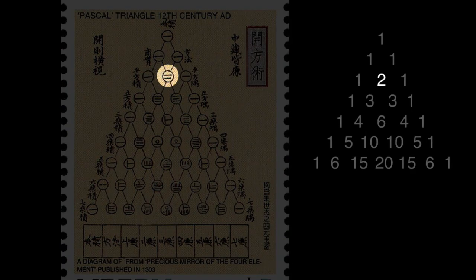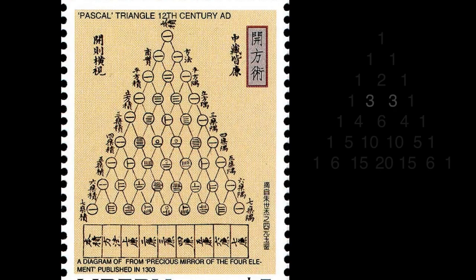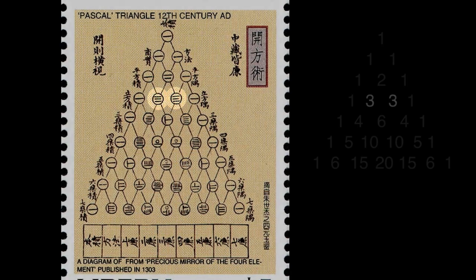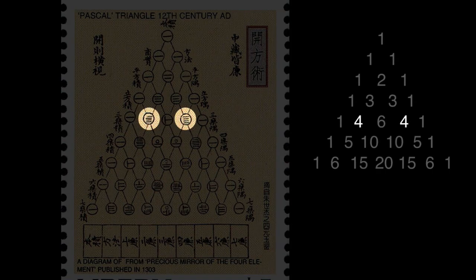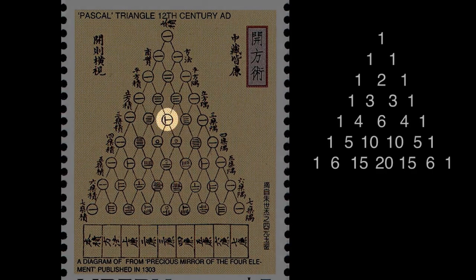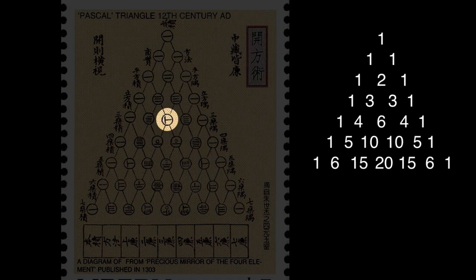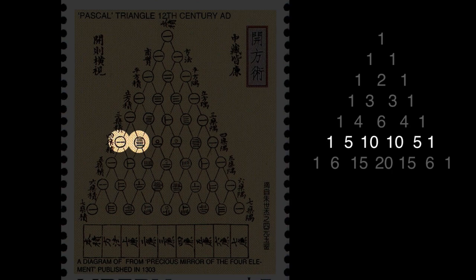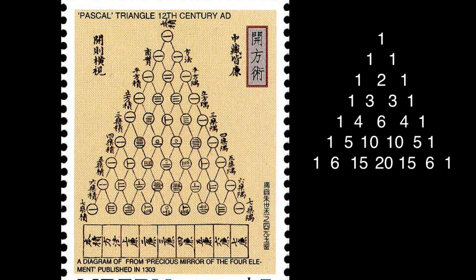If we look at the third row, the two horizontal bars must represent the number 2. Likewise, this symbol must be 3, so 3 bars represents the number 3, and 4 bars the number 4. If this is Pascal's triangle, then this symbol must be the number 6. The next row is 1, 5, 10, 10, 5, and 1, and so on and so forth.